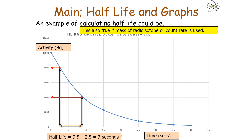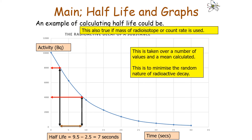To get the best values in experimental work, the half-life should be taken over a number of values and a mean calculated. Calculating an average will minimise — not completely eliminate, but reduce — the effect of the random nature of radioactive decay.